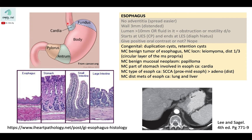In the distal esophagus, in the context of chronic GERD, acids from the stomach reflux into the esophagus. The esophagus responds by developing a tougher type of lining, which is why it develops into adenocarcinoma.